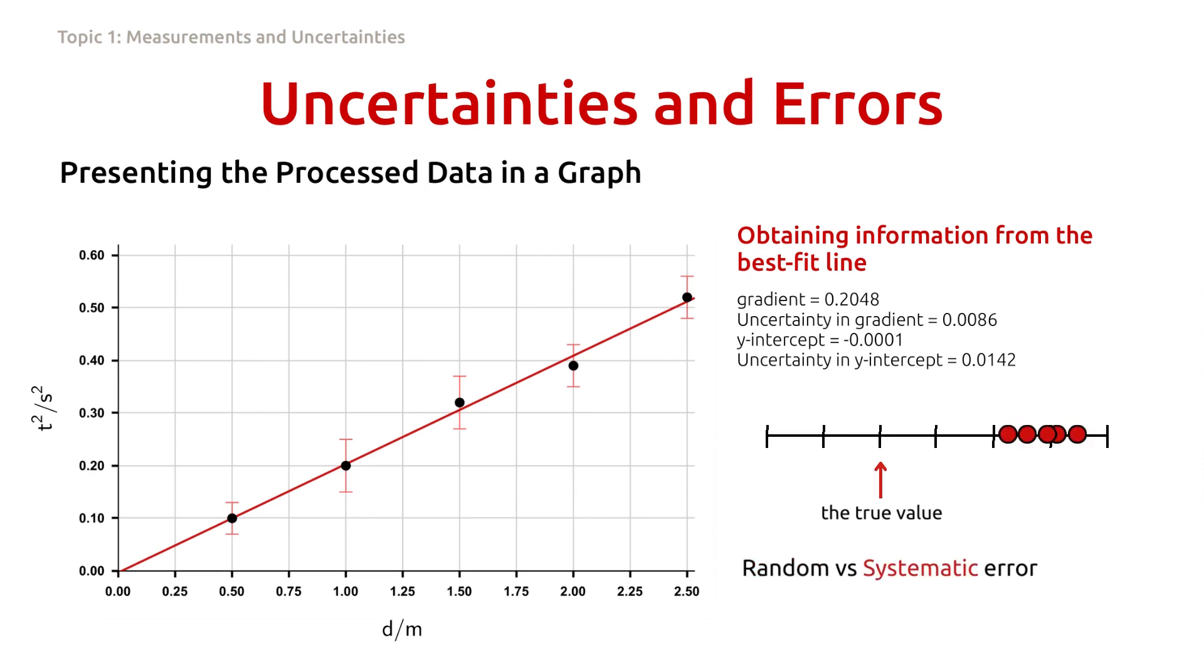But if we get something like this, where the measurements are off by roughly the same amount, this is known as a systematic error. This is caused by things like incorrectly calibrated instruments. As a result, the best fit line will cross the y-axis at a value that is different from what was expected.